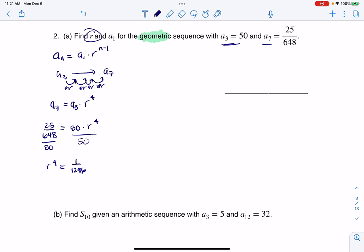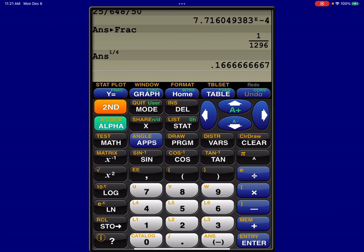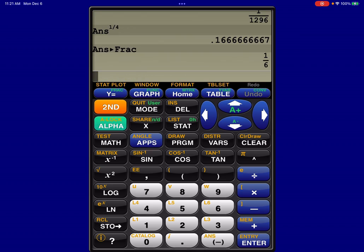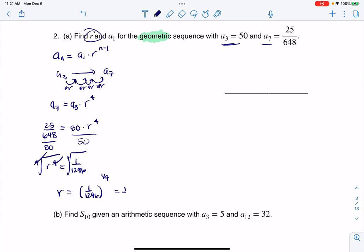And then if I want to solve for r, what I need to do is take the fourth root. So you can think of it as taking the fourth root of both sides if you want. And those would cancel and that would give me r. Now I'm going to, on my calculator, convert this to a rational exponent. This is really 1 over 1296 to the one-fourth. So let's see what that number is. I'm going to take this number to the one-fourth, and that gives me 0.17. But let's look at it as a fraction, and it looks like it's one-sixth. So I know r is one-sixth. So there's half of my battle.